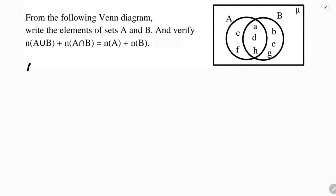In set A, we can clearly see the elements a, c, d, f, h. So we write set A as {a, c, d, f, h}. These are the five elements of set A.